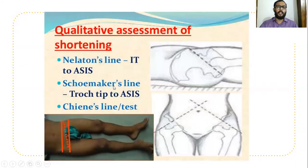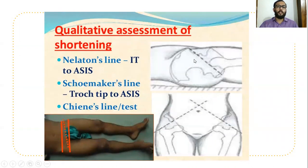Coming to the next clinical examination — first is Nelaton's line. From the ischial tuberosity, a line is drawn to the anterior superior iliac spine; it should pass through the greater trochanter. In neck of femur fracture, the greater trochanter is proximally displaced, so the greater trochanter is above Nelaton's line. In posterior dislocation of the hip also, the greater trochanter is proximal to Nelaton's line. But in anterior dislocation of the hip, the greater trochanter is distal to Nelaton's line.